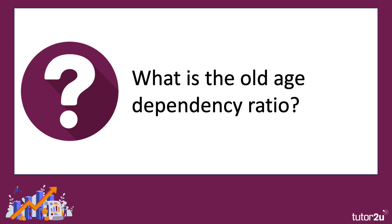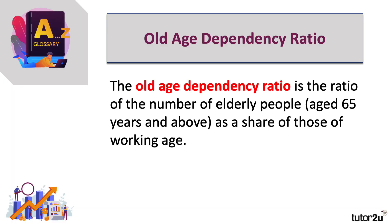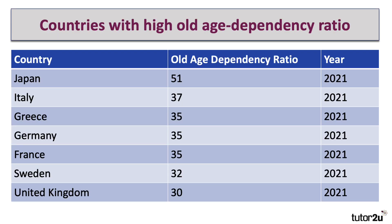What is the old age-dependency ratio? Because this is a video on the economics of global ageing. Well, that is the ratio of the number of elderly people — defined as those aged 65 and above — as a share of those of working age. And these are the countries with particularly high old age-dependency ratios. Japan is streets ahead with a ratio of 51.